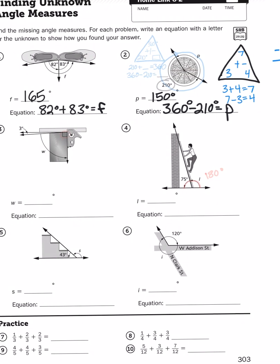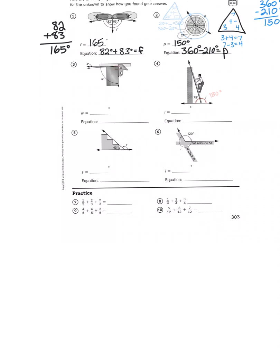So you're just going to find the missing addend, or subtract the two numbers to get your difference to figure out that missing angle measure.